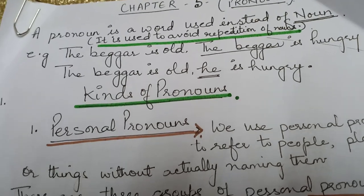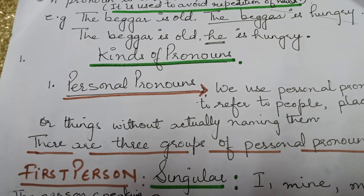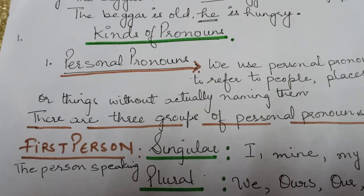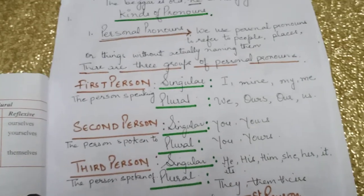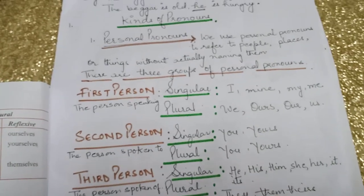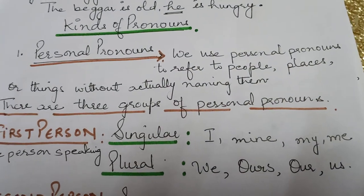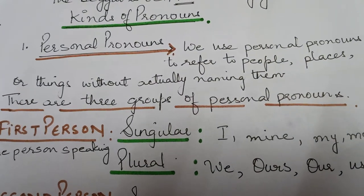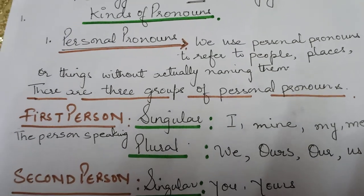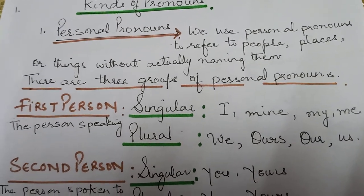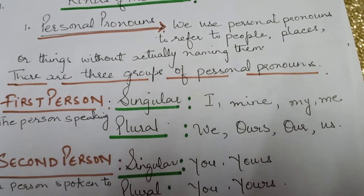In this chapter, we'll study about kinds of pronouns. First, we'll look at personal pronouns. We use personal pronouns to refer to people, places, or things without actually naming them. There are three groups of personal pronouns.